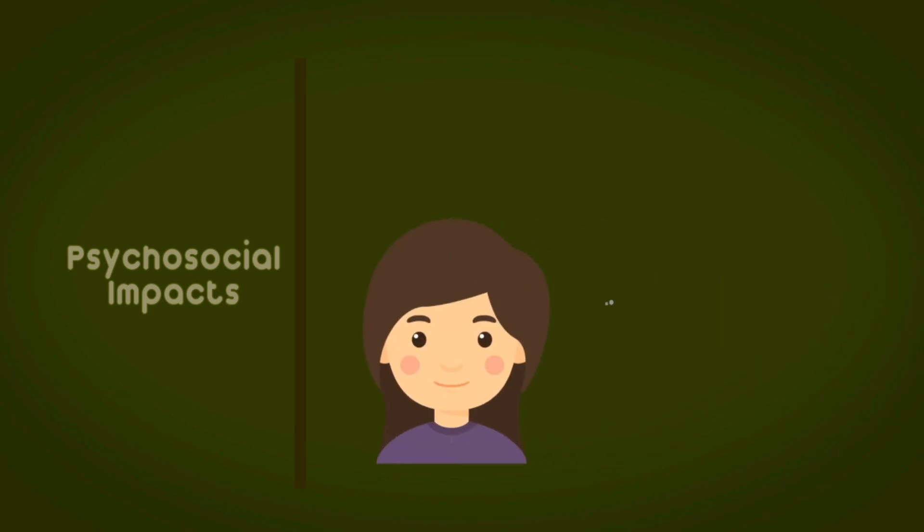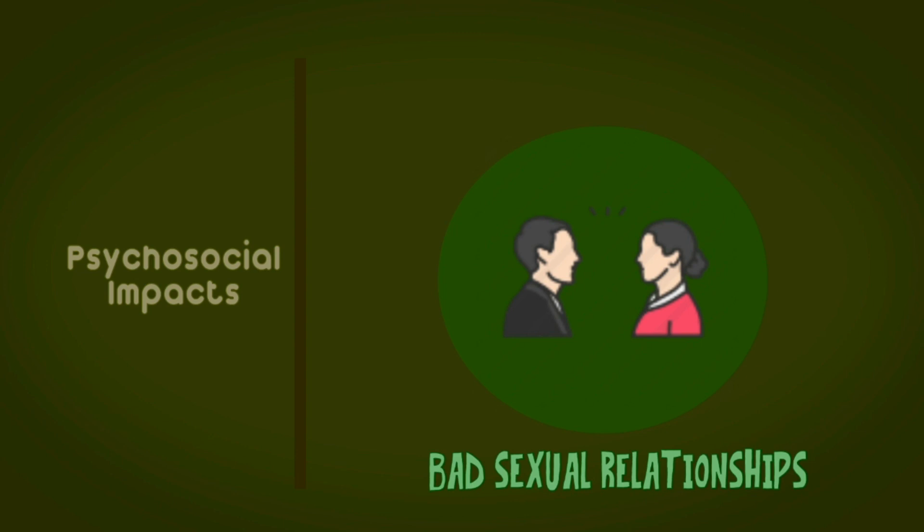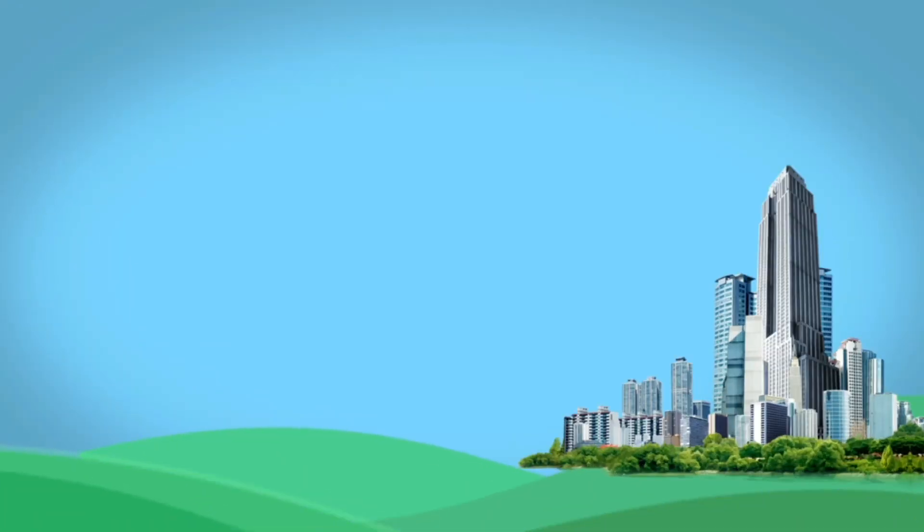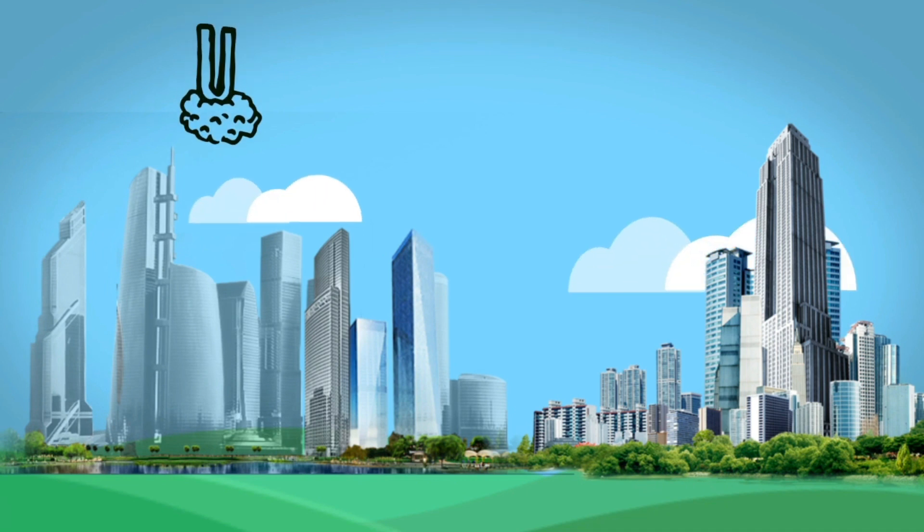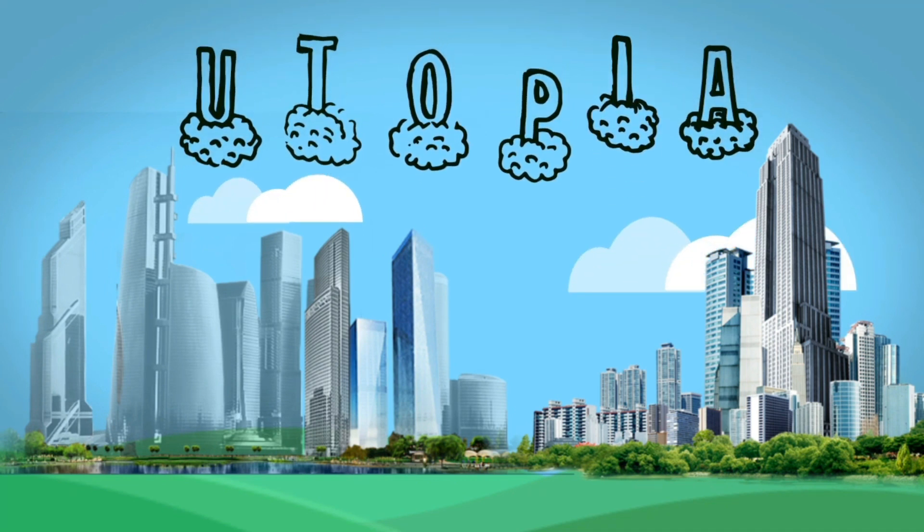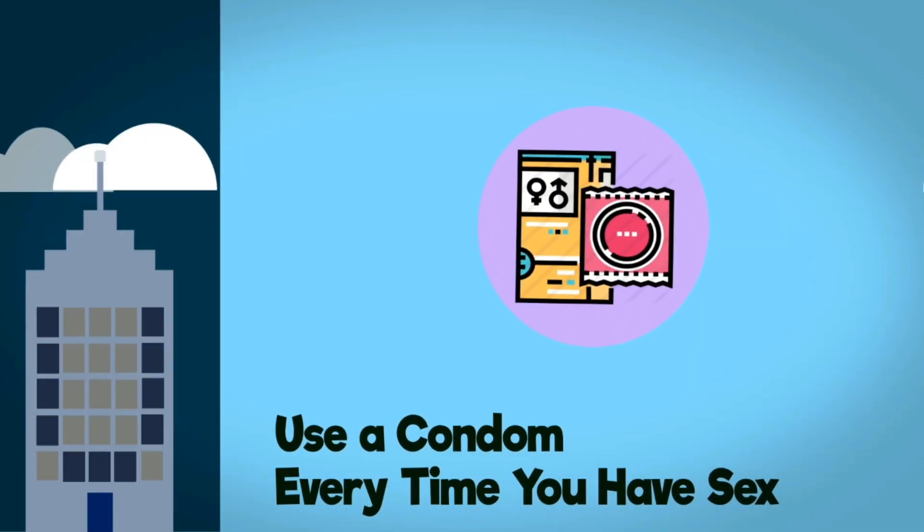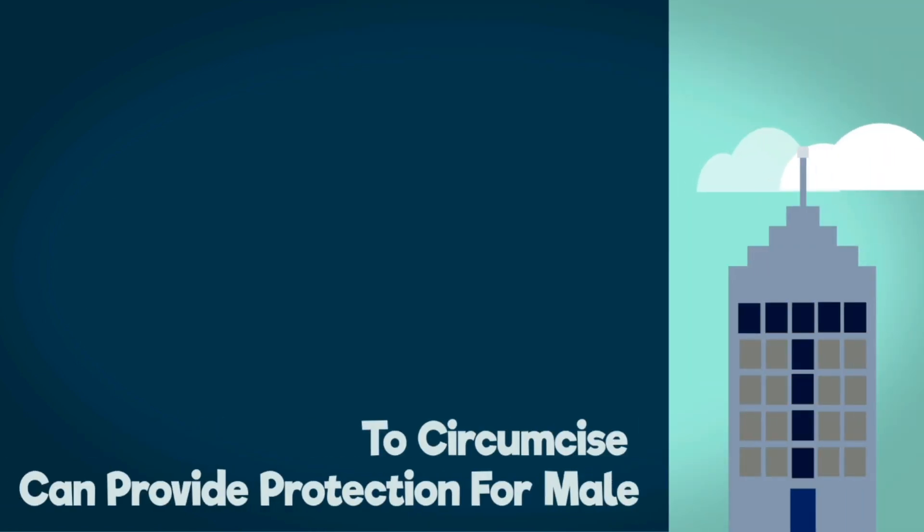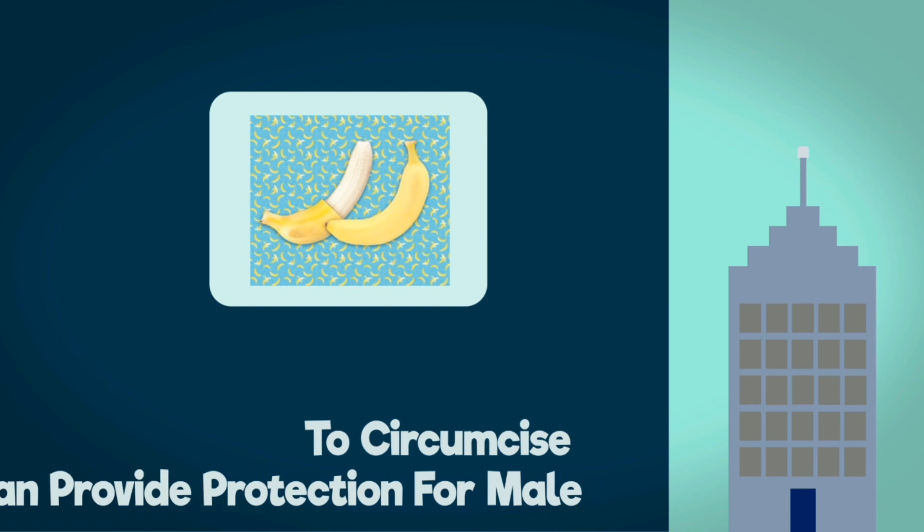An infected person could also obtain psychosocial impact such as social stigma and bad sexual relationships. Then how to prevent it? Let's prevent genital herpes with UTOPIA. U: Use a condom every time you have sex. T: Circumcision can provide protection for males.